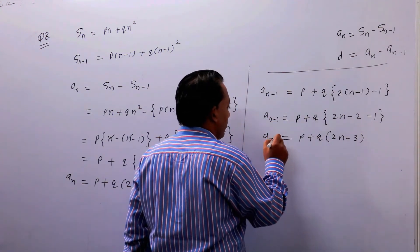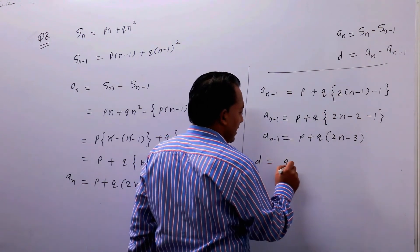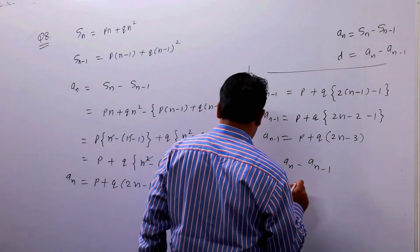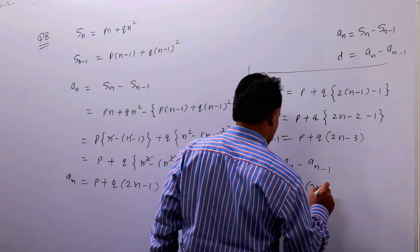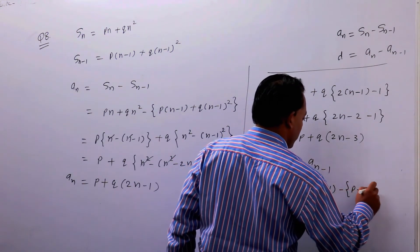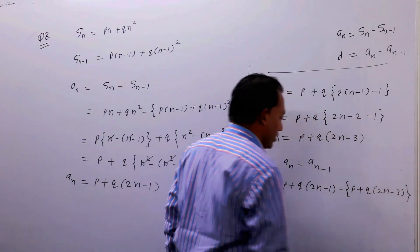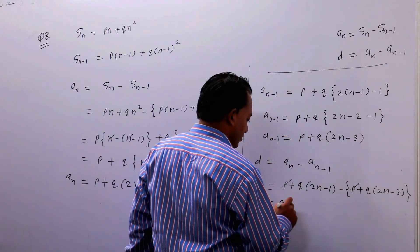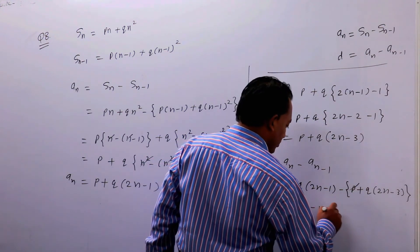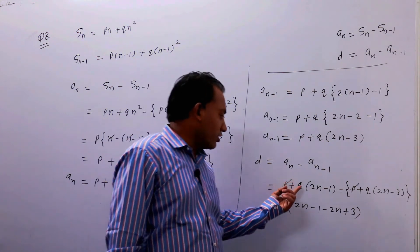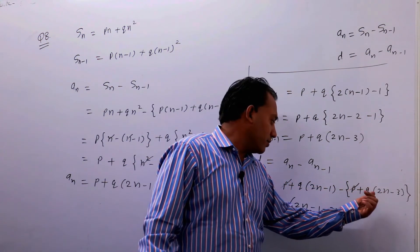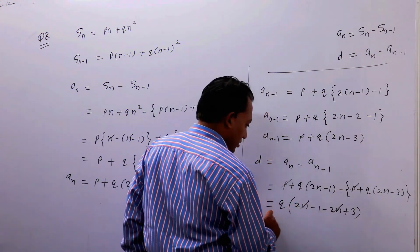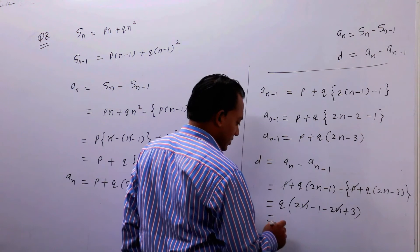अब a(n-1) मिल गया। Common difference के लिए formula: d = an minus a(n-1)। an की value है P + Q(2n-1), और a(n-1) की value है P + Q(2n-3)। P से P cancel। Q common कर दीजिए: Q[(2n-1) minus (2n-3)] = Q[2n minus 1 minus 2n plus 3]। 2n से 2n cancel, minus 1 plus 3 = 2। तो common difference = 2Q।